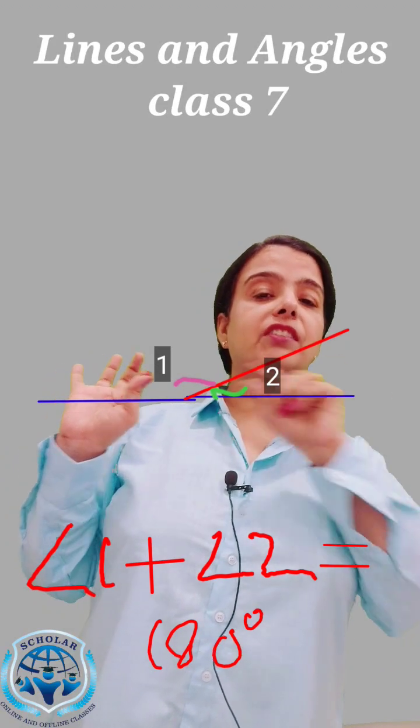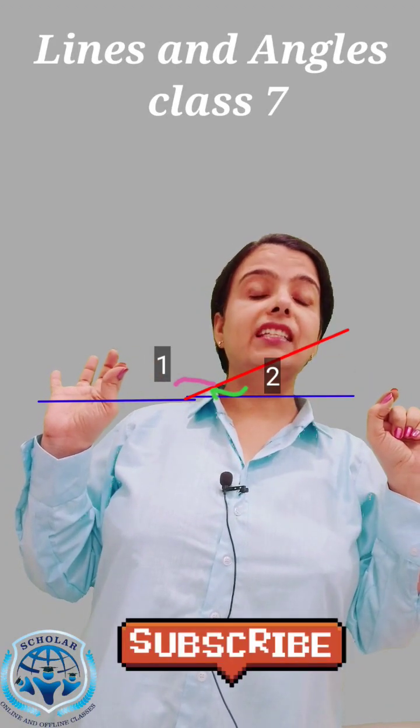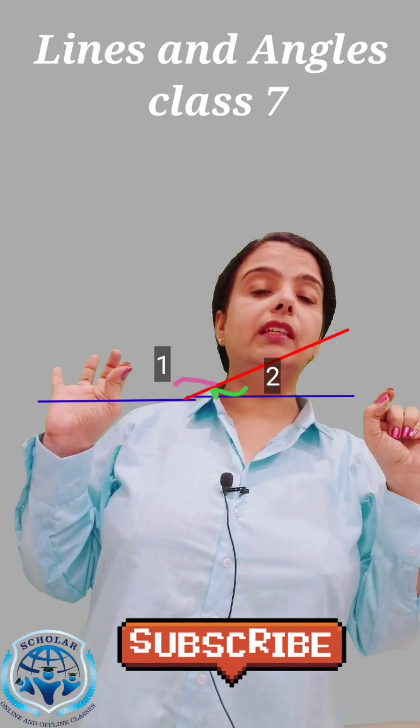So, these two angles which are placed on a line, that means linear, these two angles form the linear pair.